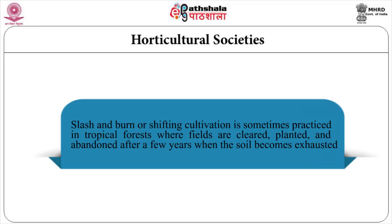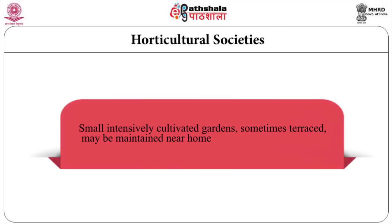Because the diversity of biological species increases towards the equator and decreases towards the poles, tropical horticulture can be a very complex phenomenon, with many different species whose requirements complement each other — interplanted, maturing at different times and used for different purposes. Elsewhere, the intensity of cultivation can vary greatly between and within societies. Small intensively cultivated gardens, sometimes terraced, may be maintained near home while plots for different species are located further afield.